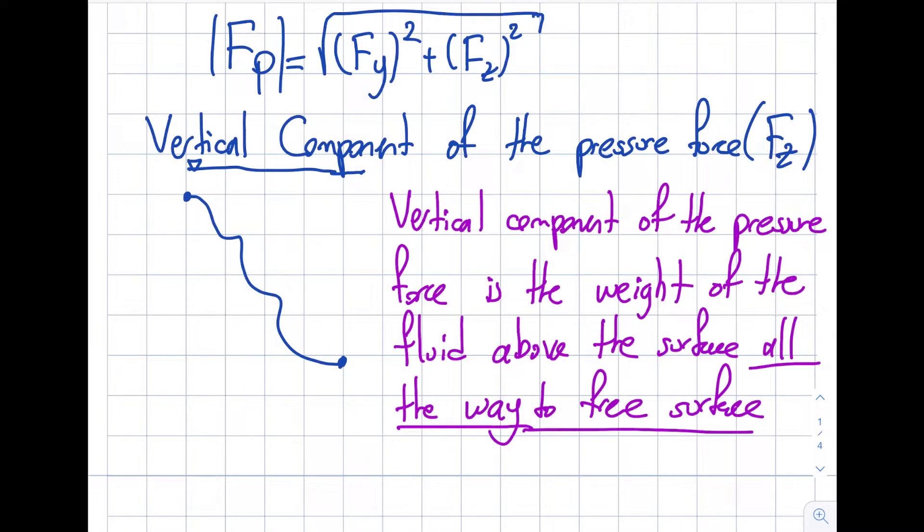So basically if I draw this in orange color, I will get myself the weight of the fluid above the surface that I'm interested in all the way to the free surface. Let's call this y1 comma z1. Let's call this y2 comma z2.